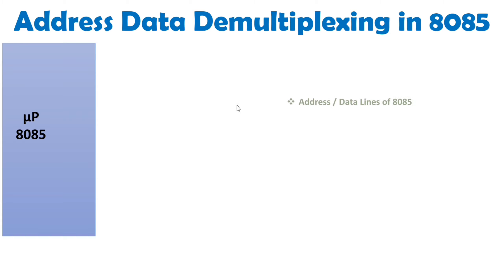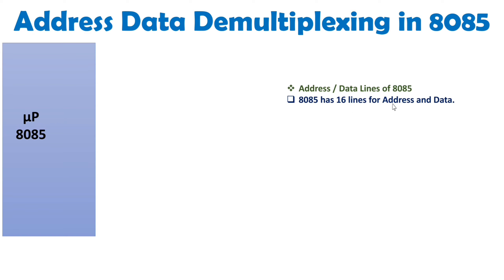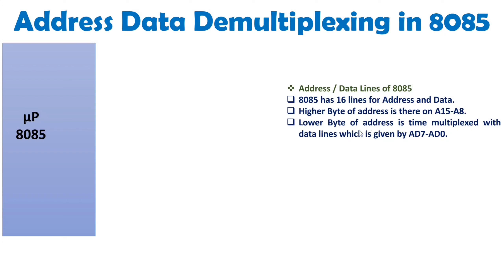So how can we separate address and data? That is what I'll be explaining here with a circuit. With microprocessor 8085, the higher byte of address is carried on lines A15 to A8 — there is nothing special we need to do with those. However, the lower byte uses time-multiplexed address/data lines, given by AD7 to AD0, and that is what we are dealing with to separate.